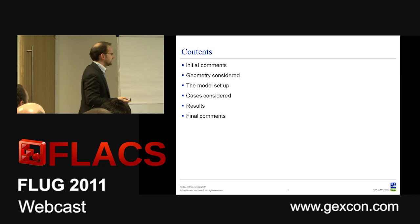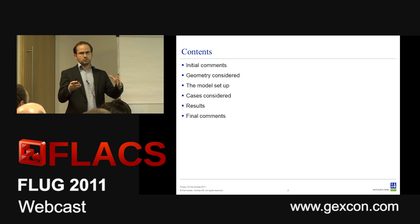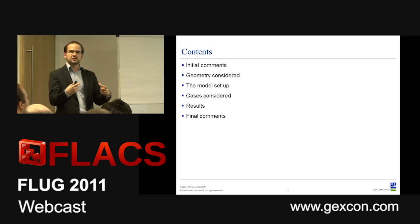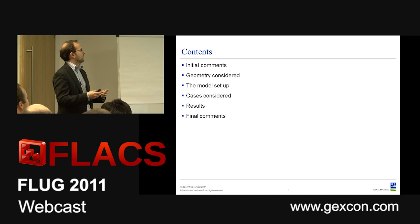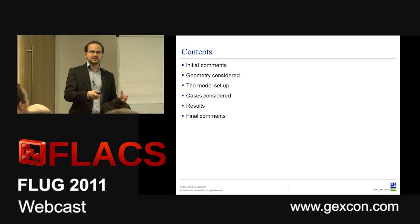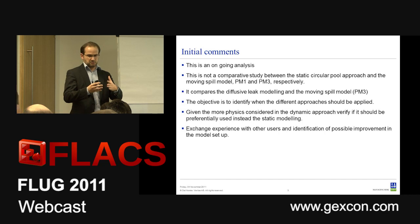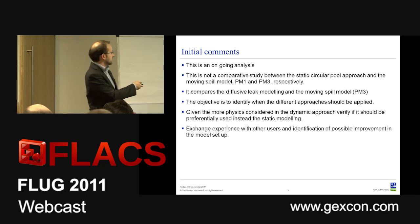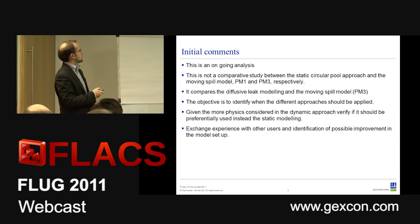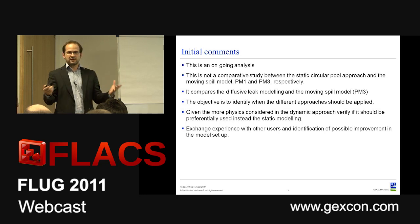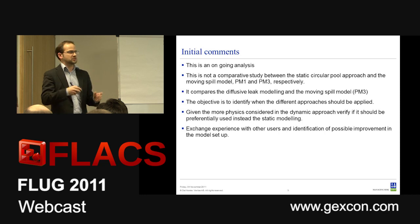It might be a little bit misleading when I say it's a comparative study, because in what we call the dynamic approach for the pool model in FLACS, we have an option with a fixed radius of the pool — that's not what we call the static approach. What we're going to do is use the spreading of the pool, called PM3, and compare it with a set of leaks modeled in the pool area as a diffusive leak.